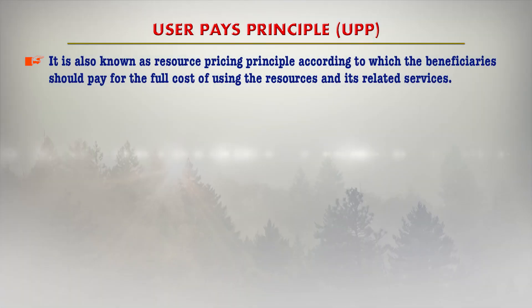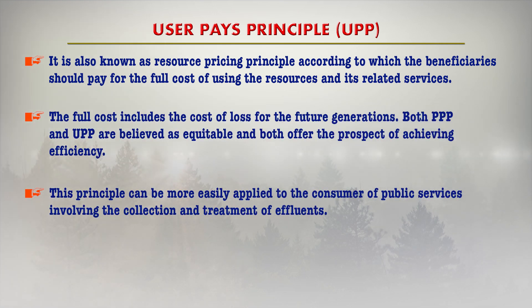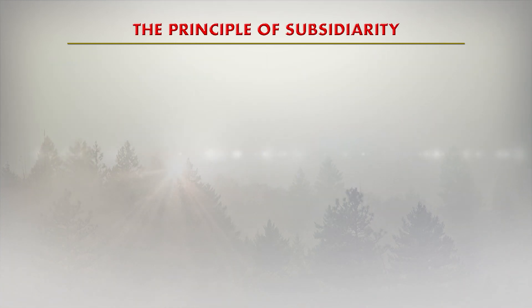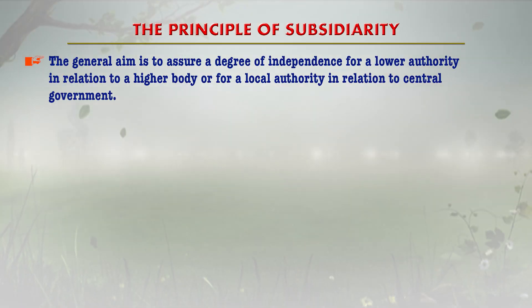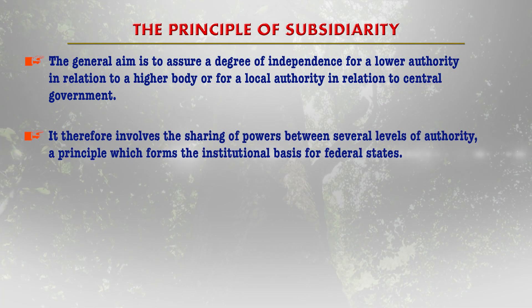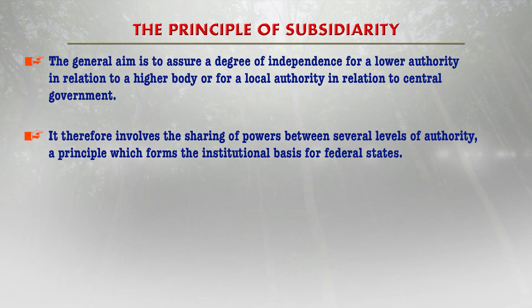Then there is the user pays principle, UPP — also known as the resource pricing principle — according to which the beneficiary should pay for the full cost of using resources and their relative services. The full cost includes the cost of loss for future generations also. Both PPP and UPP are believed to be equitable and both offer the prospect of achieving efficiency. The next principle is the principle of subsidiarity, which generally aims to ensure a degree of independence for a lower authority in relation to a higher body or for a local authority in relation to central government. It involves sharing of powers between several levels of authority, a principle which forms the institutional basis for federal states.